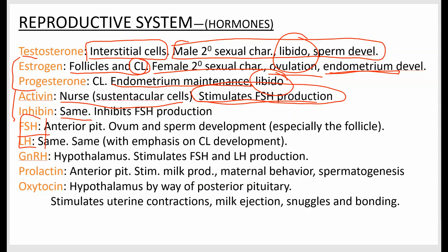Follicle-stimulating hormone (FSH) and luteinizing hormone (LH) — you need to know their full names. Both are made in the anterior pituitary. FSH deals with follicle development and LH with the corpus luteum, but generally both promote gamete development — egg and sperm. Gonadotropin-releasing hormone (GnRH) is produced in the hypothalamus and acts on the anterior pituitary to cause it to produce and release its hormones.